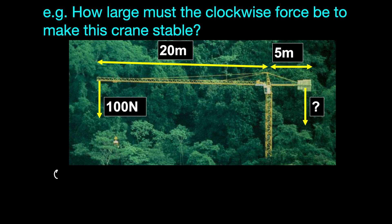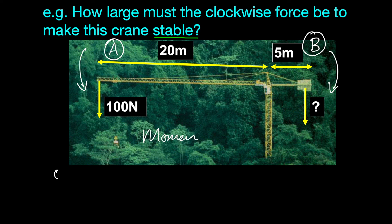Now that we've had a go, let's take a look at this question. The question states that this crane is stable. In order for the crane to be stable, the principle of moments must apply, so the anticlockwise moment must be equal to the clockwise moment. Let's call this side A and this side B. So if the moments weren't equal, the crane would fall over.